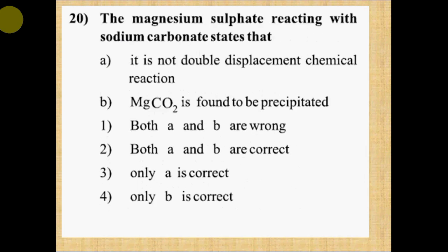Question number 20: The magnesium sulphate reacting with sodium carbonate states that: A, it is not double displacement chemical reaction. B, MgCO3 is found to be precipitated. Option 1, both A and B are wrong. Option 2, both A and B are correct. Option 3, only A is correct. Option 4, only B is correct. Correct answer is option 1, both A and B are wrong.